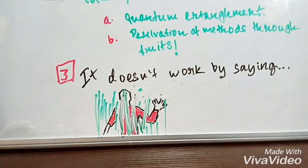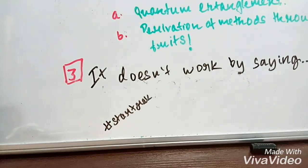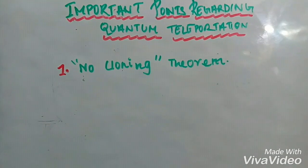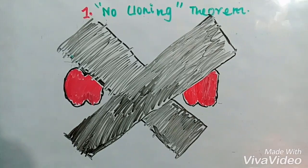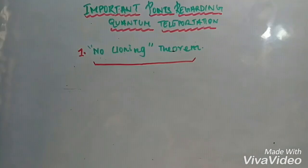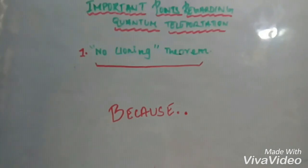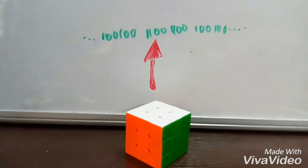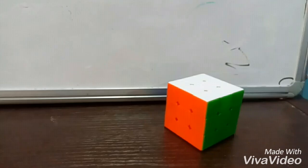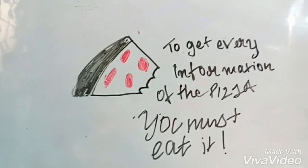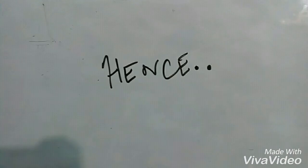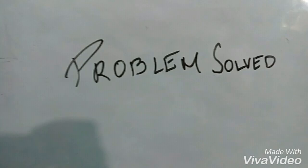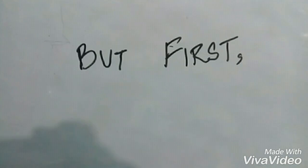Moving on — the no-cloning theorem, number one. This theorem says that no two objects or particles can exist that have the exact same proportions and properties as each other. Is this a problem for us? No, because in quantum teleportation, when the information is extracted from the object, the object is destroyed in the process. Think of it like this: to get the full taste of a pizza, you must first eat it. Now you have the taste — the information — but no pizza. Hence, problem solved, as there is now only one object: the teleported one, not violating the cloning theorem.